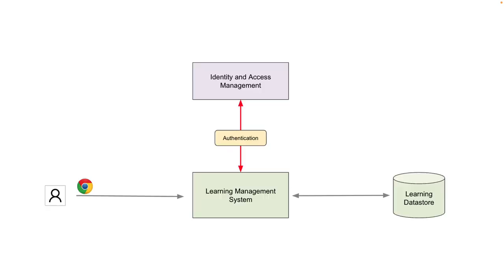Let's say that you are a developer and you want to write a learning management system — basically put out some courses so that people can download, watch, and make some money out of it. The first thing you have to do is figure out who your users are and how and where you're going to store them. So you decide you have an identity and access management system — maybe LDAP, Active Directory, or any other proprietary approach. All of your learning assets are stored in a learning data store, and all user identities are stored in that identity and access management. You might use LDAP, SAML, or even OpenID Connect.